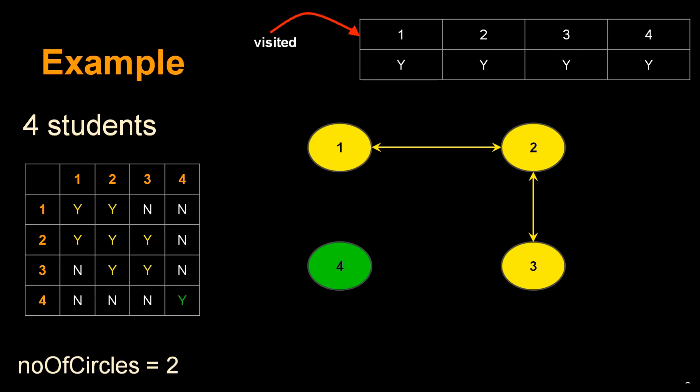Next, find the next unvisited student to search for another friend circle. Student 4 is unvisited. Since we're starting a new friend circle, increment the number of circles to 2 and mark visited[4]=Y. Student 4 has no other friends, so we're done with circle 2.